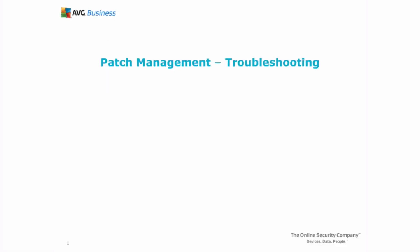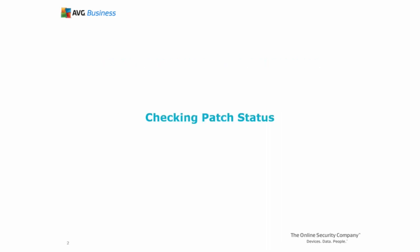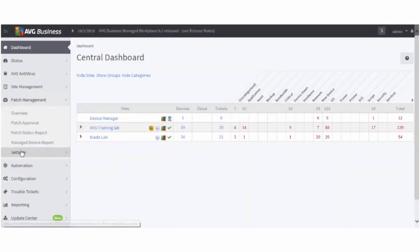In this lesson, you'll learn how to determine whether Windows patches have been successfully applied and how to troubleshoot when there is a problem. Troubleshooting means being able to remotely access devices, which is covered in a previous lesson. To check the status of patches and determine whether they have been successfully applied, go to Patch Management in the main left-hand navigation and select Settings.